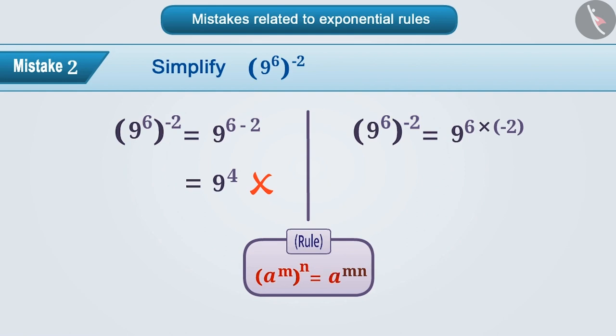Hence, the correct answer to this question is 9 to the power 6 into minus 2, which equals 9 to the power minus 12.